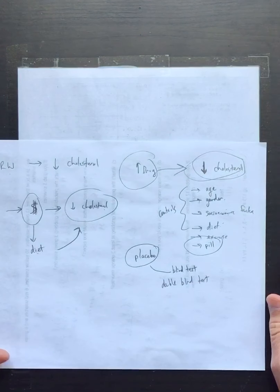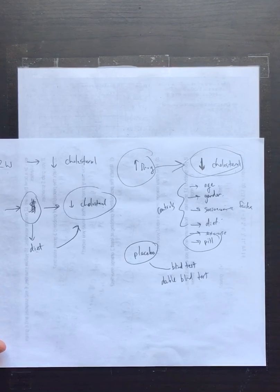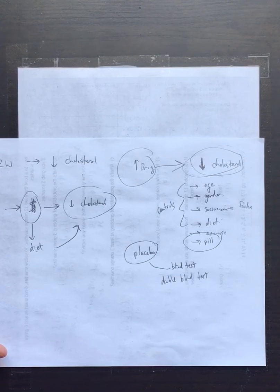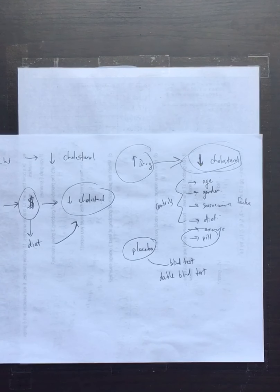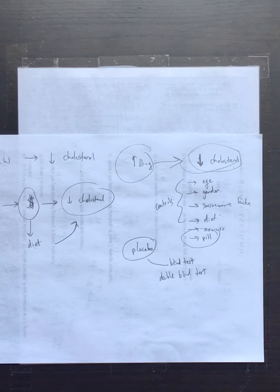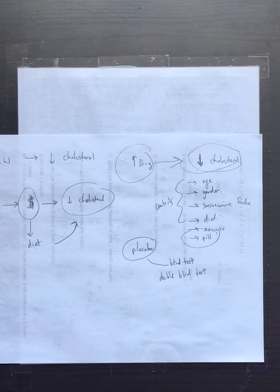So that's how a blind test works. There's also a double blind test, where not only are the participants blind to which group they're in, but the people measuring the cholesterol levels are also blind. It might seem ridiculous, but if a nurse or doctor knows that group B gets the drug, they might unconsciously look for a change in cholesterol that isn't really there, or misinterpret the data.